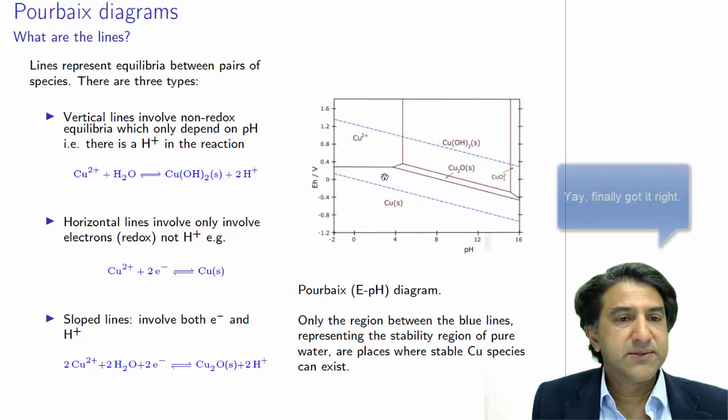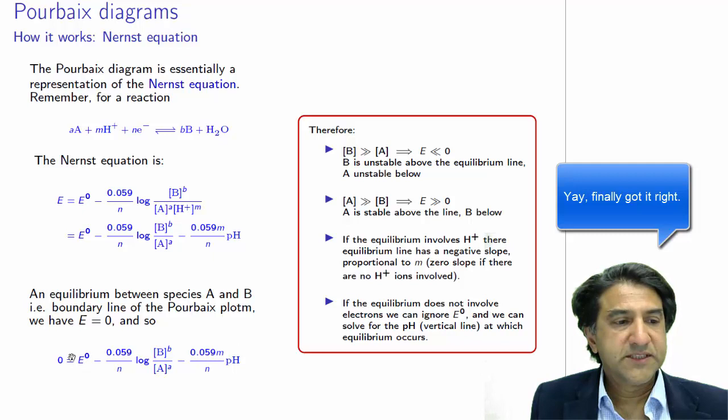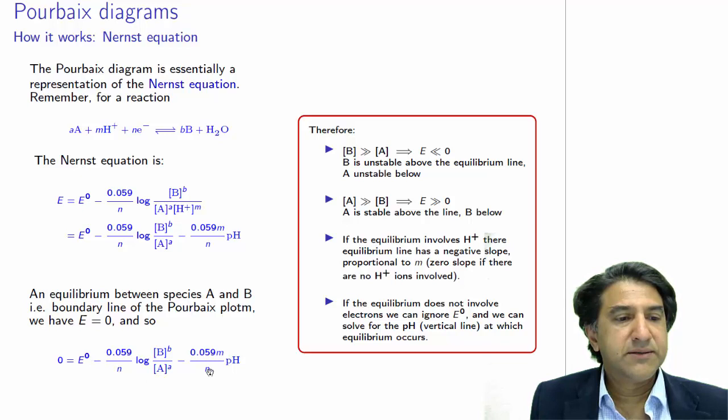And likewise, if the equilibrium doesn't involve E0, in other words, no electrons are involved, we can ignore E0, we can ignore N in this equation, and then we can cancel, we can set that to 0, we can solve for the pH that would occur. Setting this to 0 and ignoring N, we can solve for the pH at which these quantities are in equilibrium. We do have to set a particular concentration for logB and logA, but it's relatively easy.